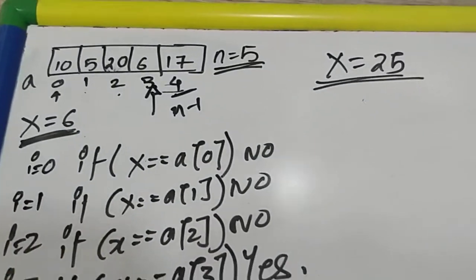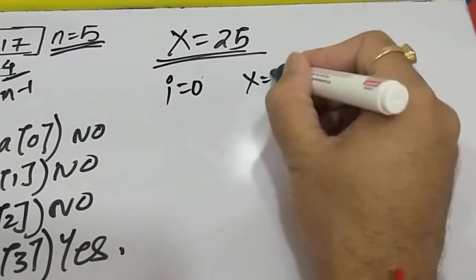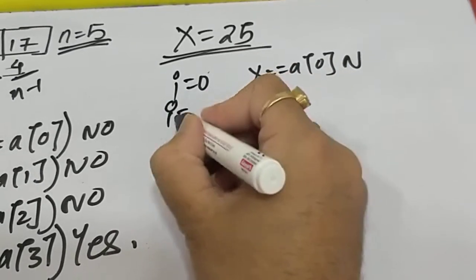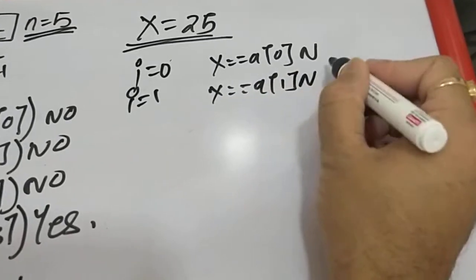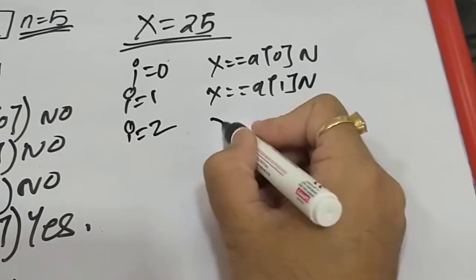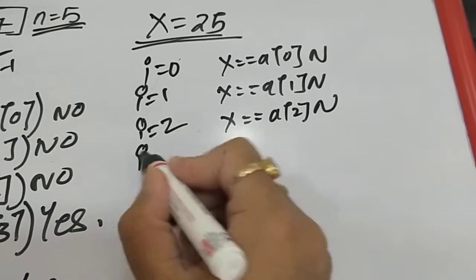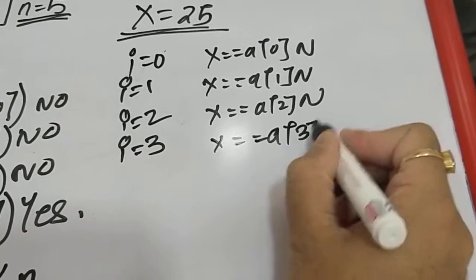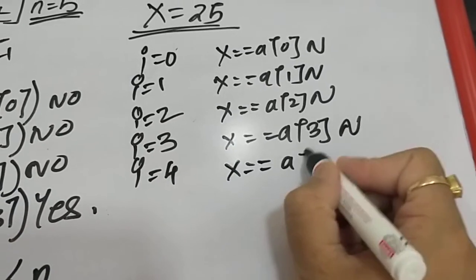Initially i is 0. Is x equal to a[0]? No. Then i is 1. Is x equal to a[1]? No. i is 2. Is x equal to a[2]? No. i is 3. Is x equal to a[3]? No. i is 4. Is x equal to a[4]? No.